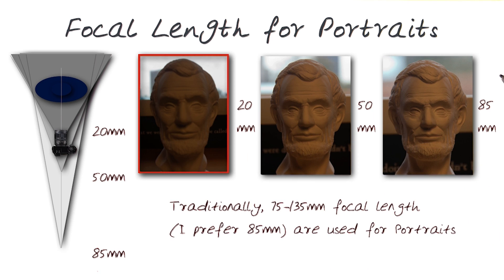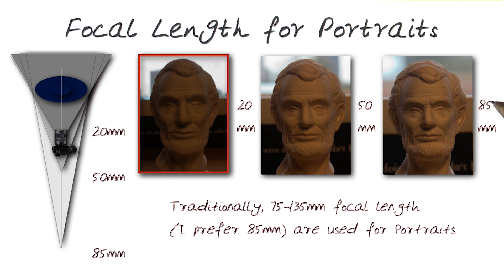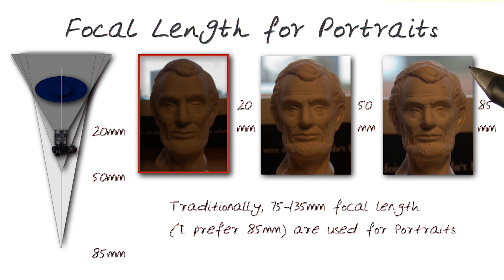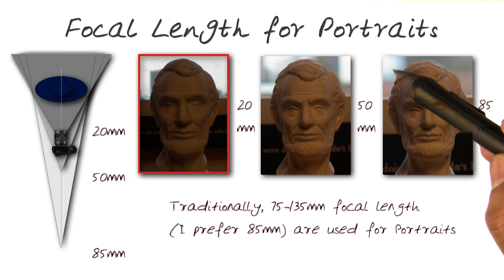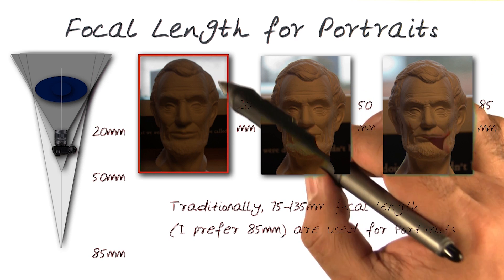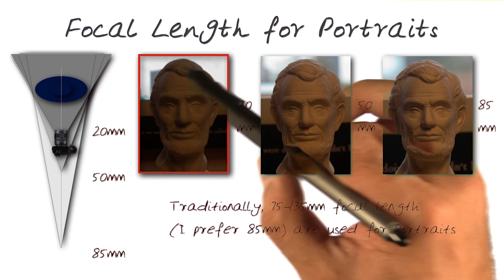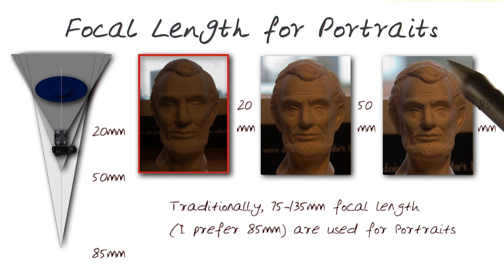Traditionally, most portrait lenses that people use are 75 millimeters to 135. I actually prefer to use an 85 millimeter — this is one of my favorite lenses because it gives you great portraits. There are other things going on that we'll also look at, such as issues around a little bit more blurring in the background, which is less visible in some of these images but much nicer in this kind of image.